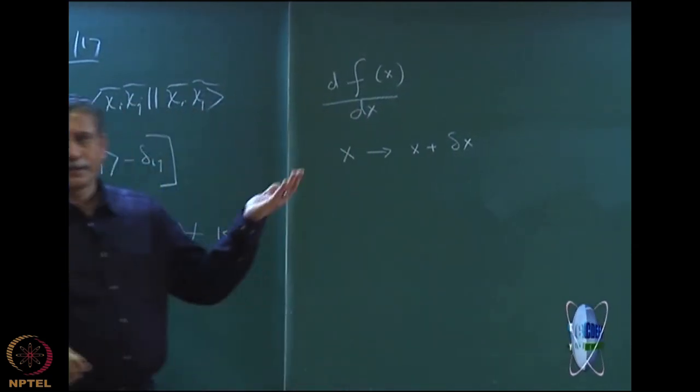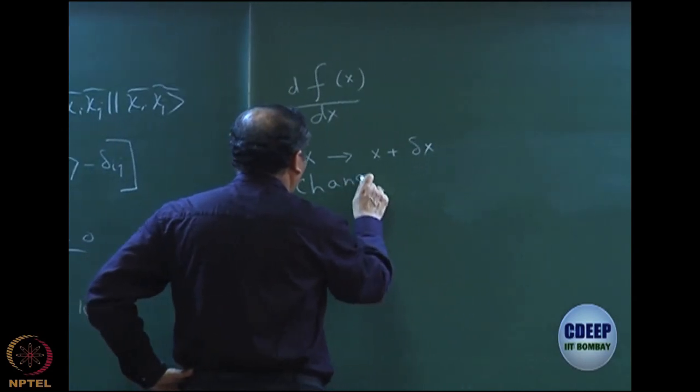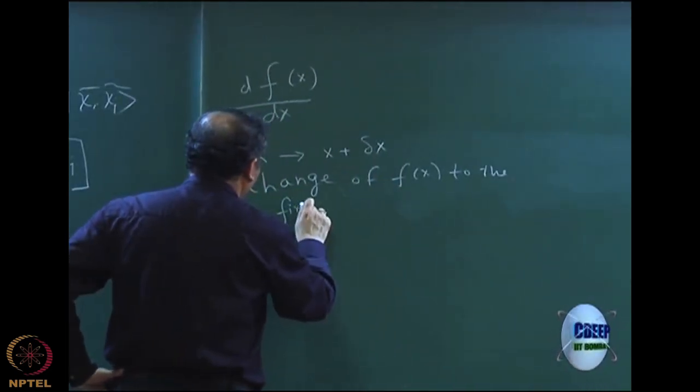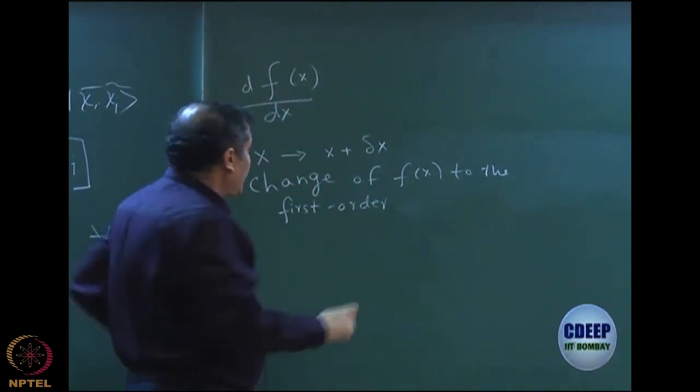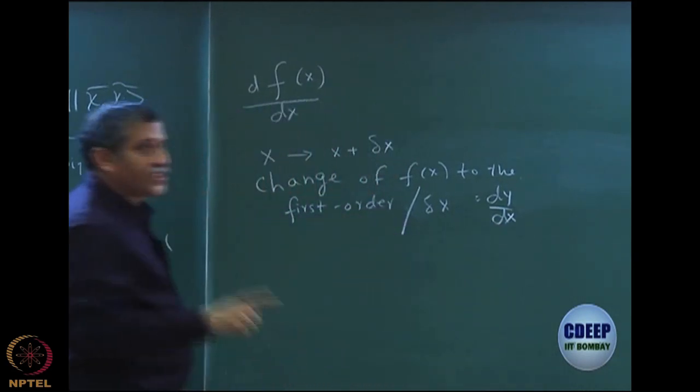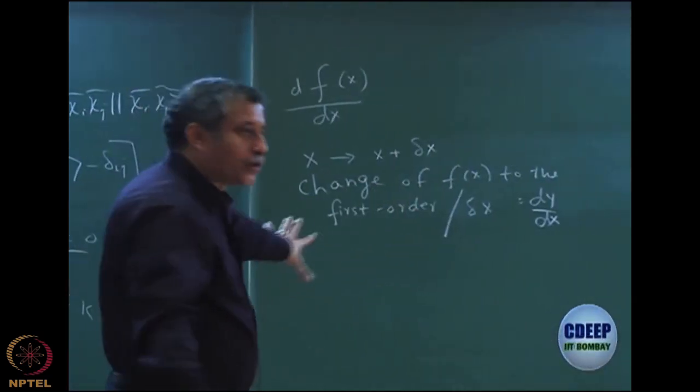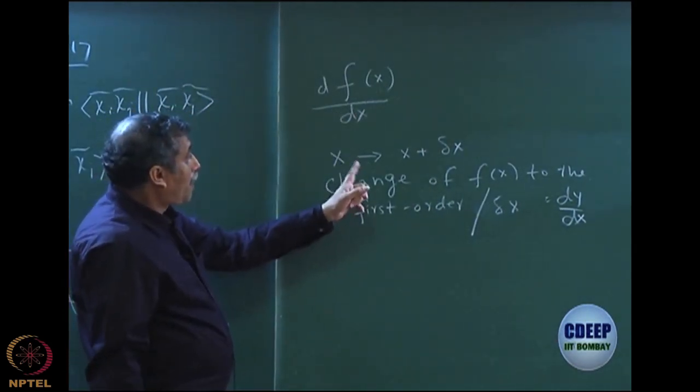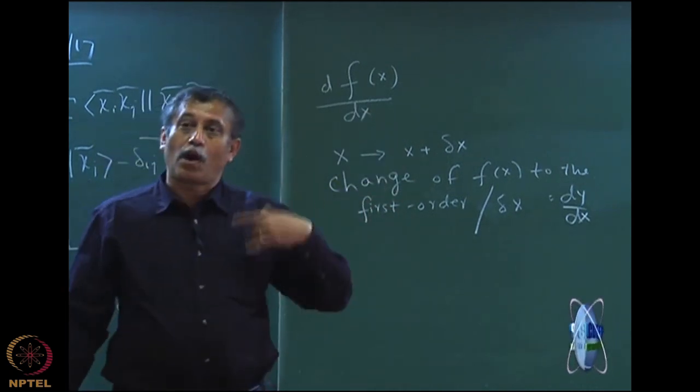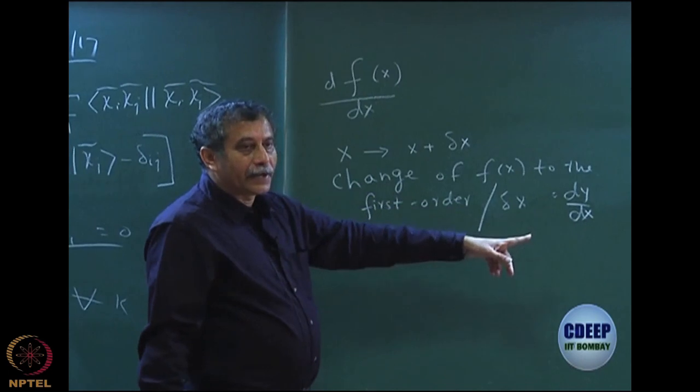then f of x changes. The change of f of x to the first order, I will define what is first order. First order is essentially the order of delta to the first order divided by delta x is equal to df dx. This is just for those who are mathematically well-oriented. But for those who are not, I will again repeat this. I make a change of the variable from the variable which I am optimizing to an infinitesimal delta x. Because of this, there will be a change in f of x. In general, the f of x will change to all orders of delta, not just for the first order. I am only going to take the first order change and then divide by delta x, I will get df dx.